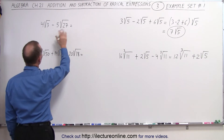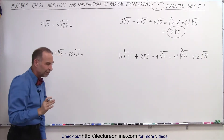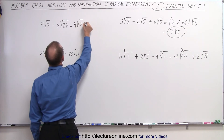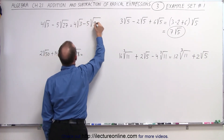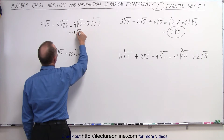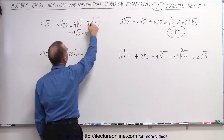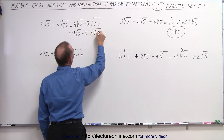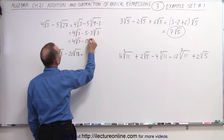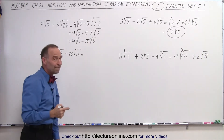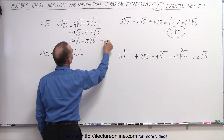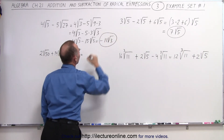On this one, at first sight they don't appear to be the same. But notice 27 can be written as 9 times 3. So this can be written as 4 times the square root of 3, minus 5 times the square root of 9 times 3. The square root of 9 is 3, so this becomes 4 times the square root of 3 minus 5 times 3 times the square root of 3, which equals 4 times the square root of 3 minus 15 times the square root of 3. Now they have the same index and the same radicand, so 4 minus 15 equals negative 11 times the square root of 3.